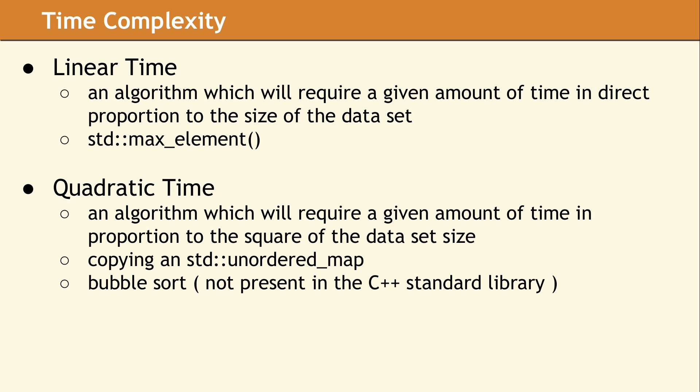When an algorithm takes quadratic time to execute, its running time will increase very quickly as the dataset grows. If the dataset doubles, the running time will increase by a factor of four. Even fairly small datasets can cause very long runtimes.